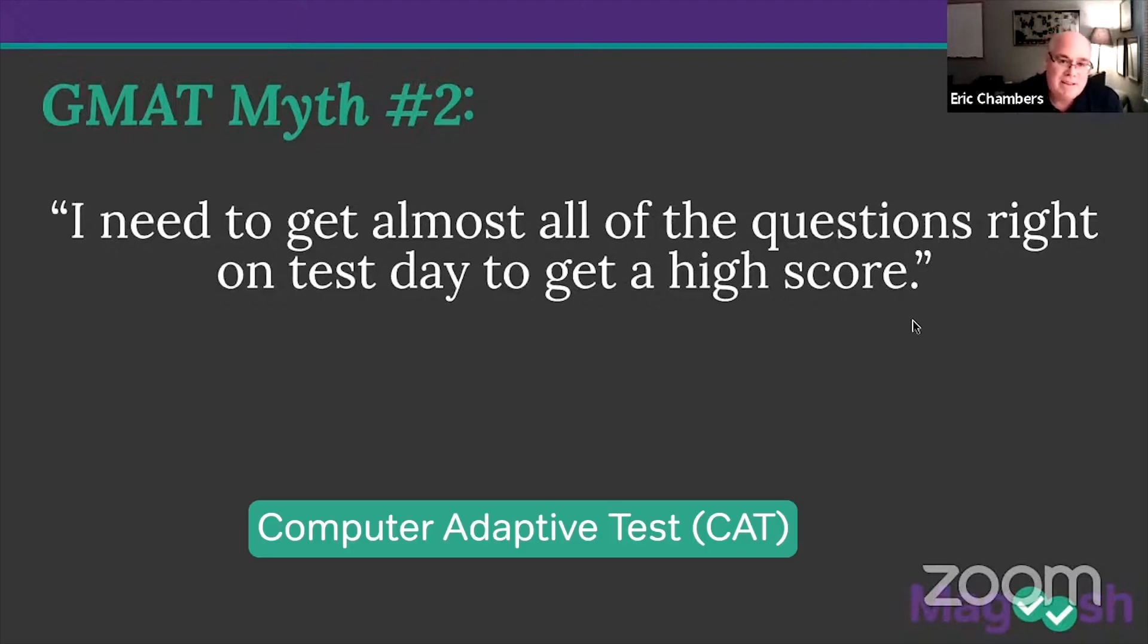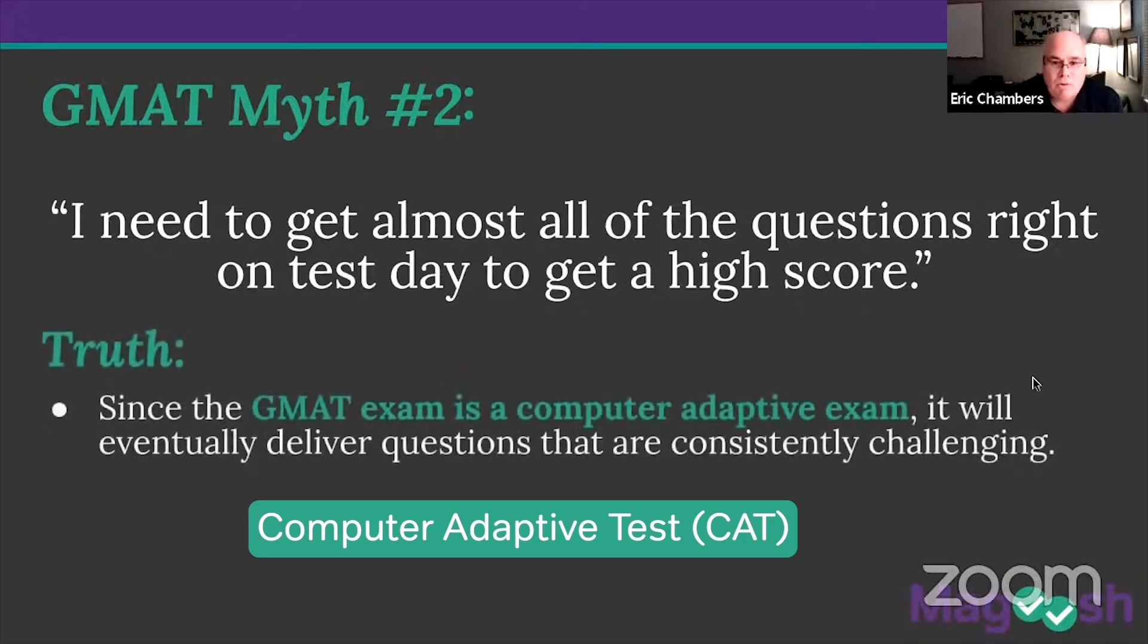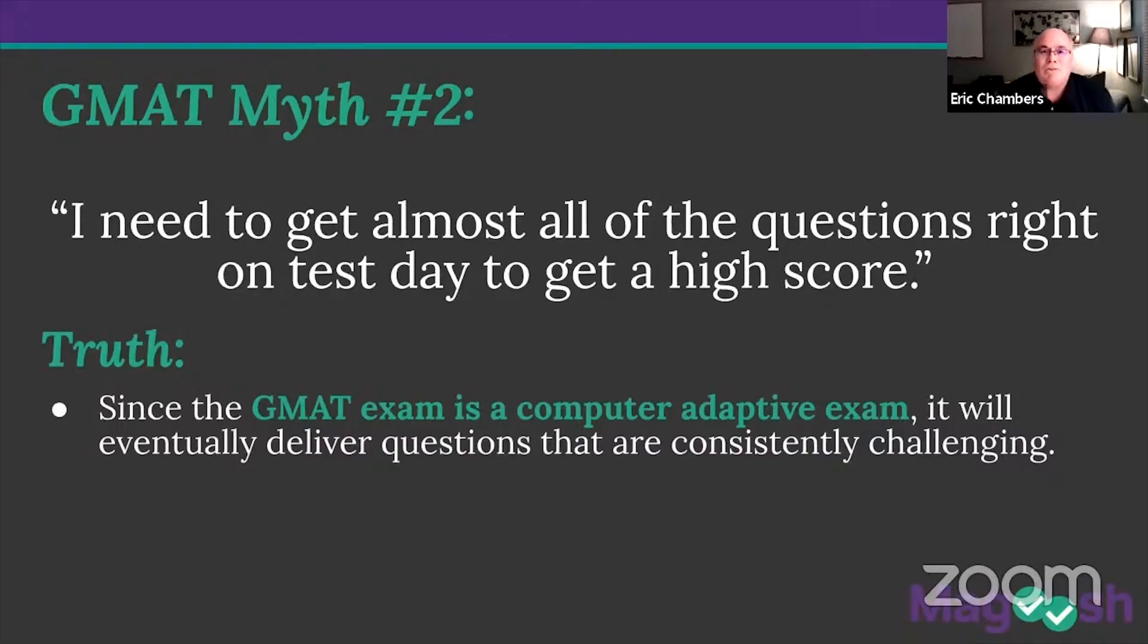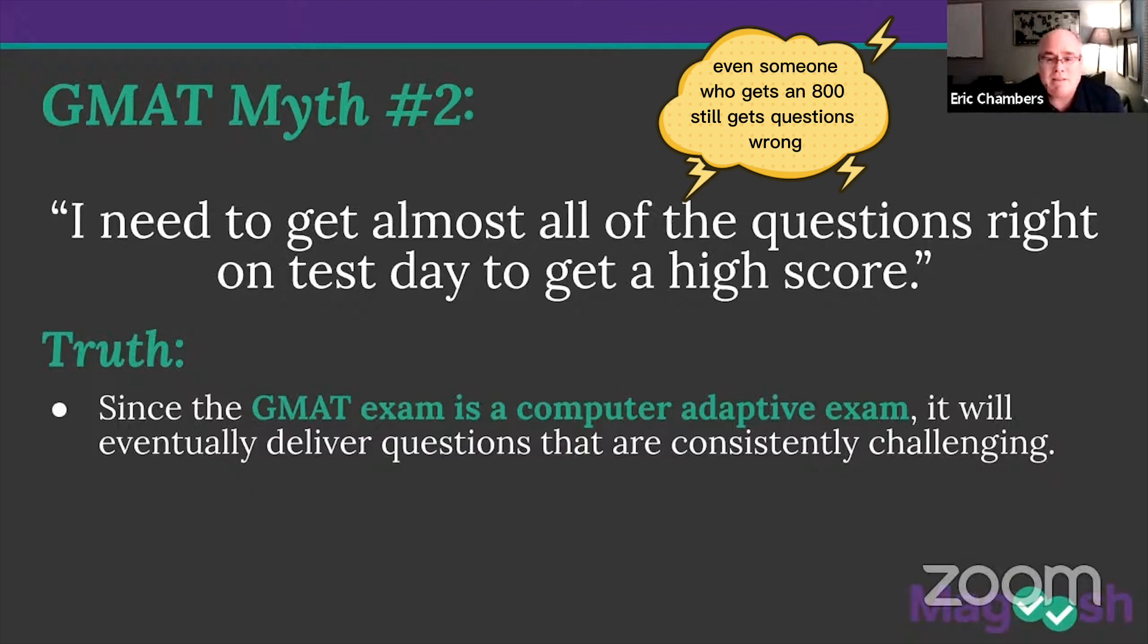But again, as this is a computer adaptive test, it's built for you. So ultimately, everyone will get questions that at some point will be consistently challenging for them. So even people like Erica, who scores super high on the test, at some point we're going to get up to where we can start to pin her a little bit. We'll start to try to give her questions that maybe are a little bit higher, a little bit stronger than even she can handle. But the point is, even somebody who gets an 800 still gets questions wrong.